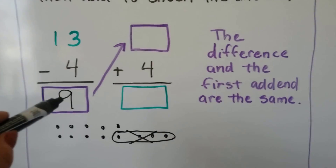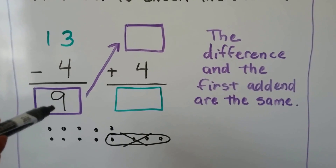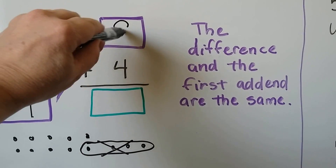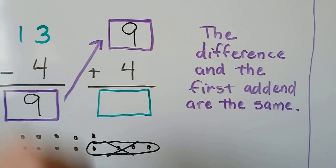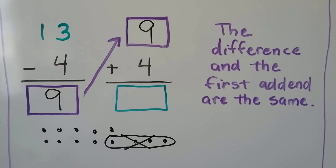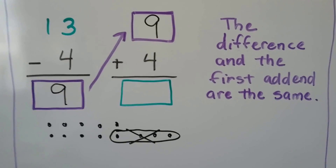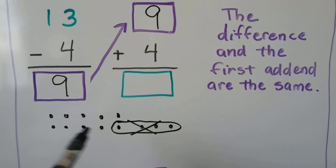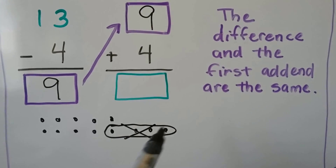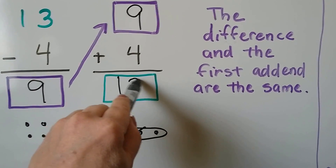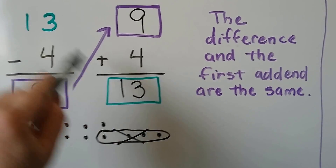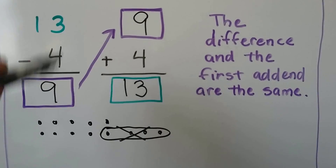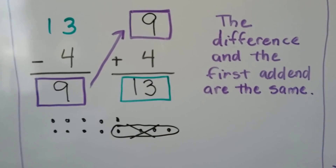The difference is going to be the same as the addend, so we put the nine up here. Nine plus four — counting on — equals thirteen. Our minuend and sum are the same, so we know we did the subtraction correctly.